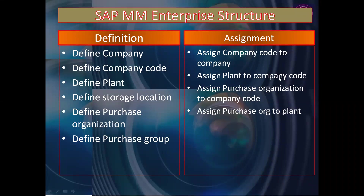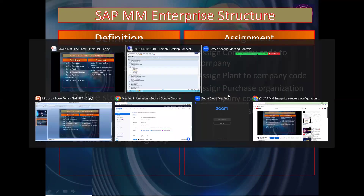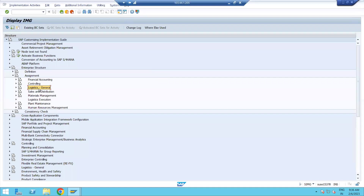In real-time projects the company code assignment is done by the FI team. They will let us know what company codes they have created, and based on that we assign our plants. So now we will complete three steps: assign plant to company code, assign purchase organization to company code, and assign purchase organization to plant — to complete our end-to-end enterprise structure configuration in SAP MM S4 HANA.